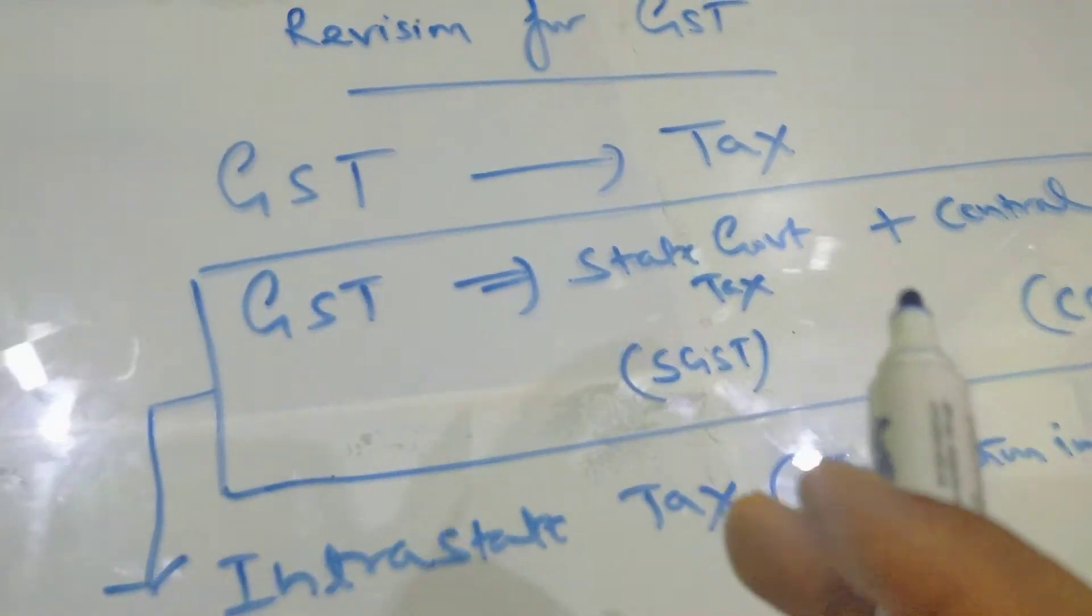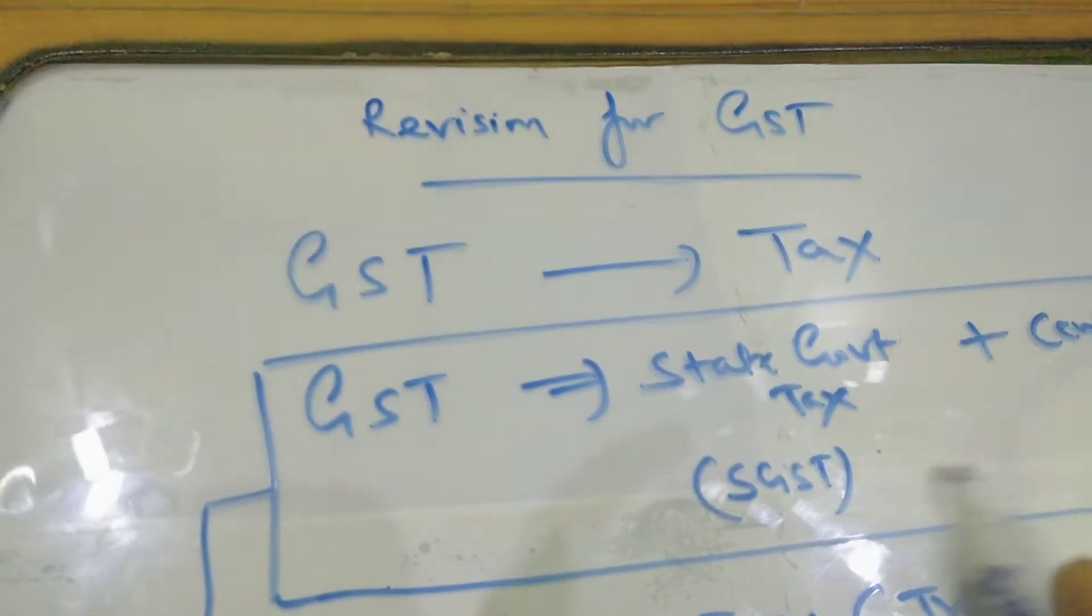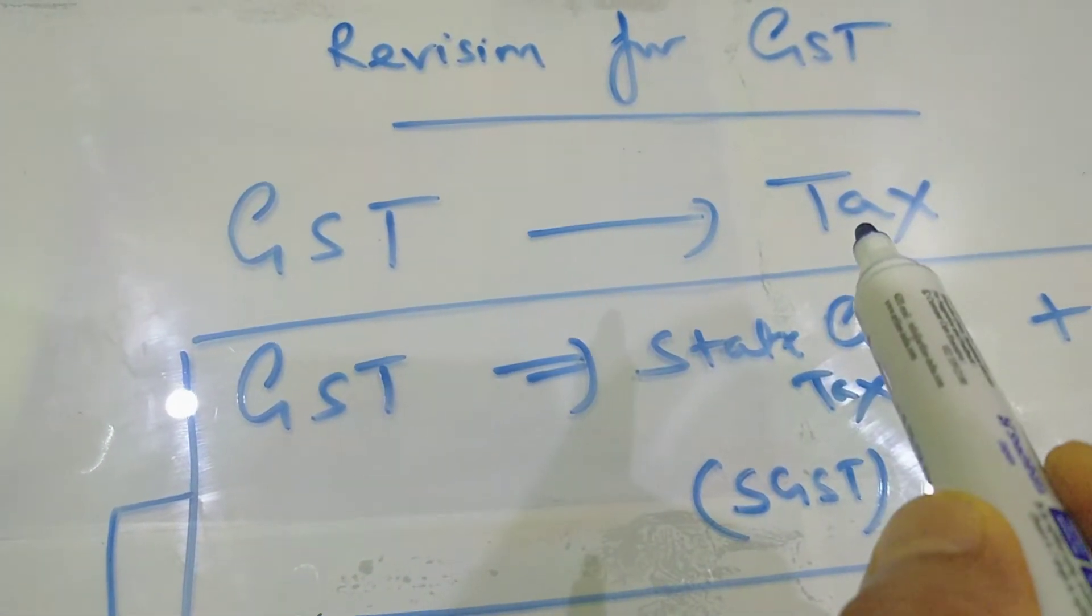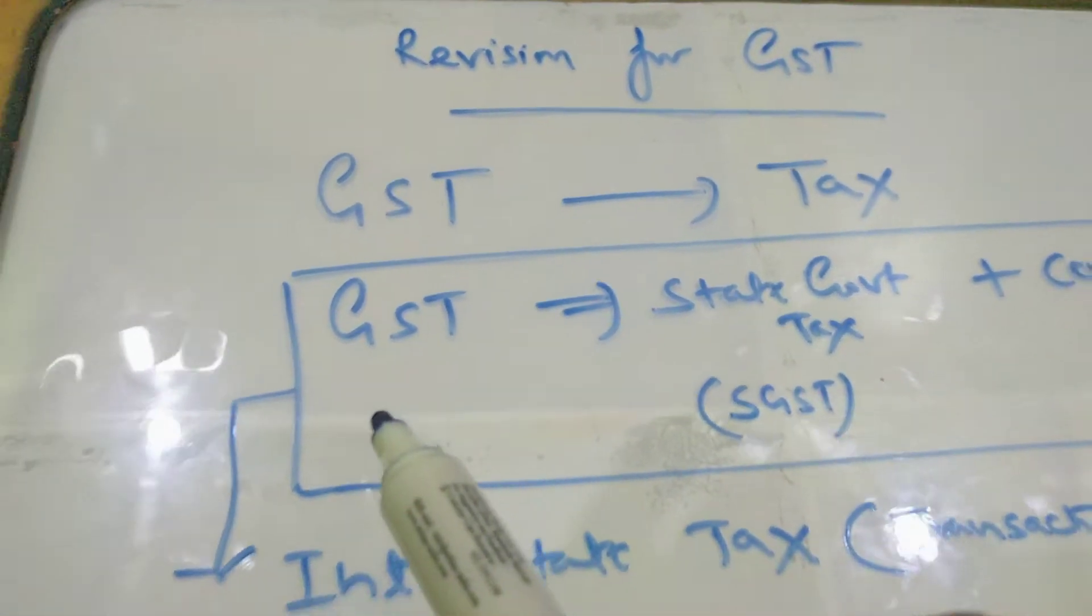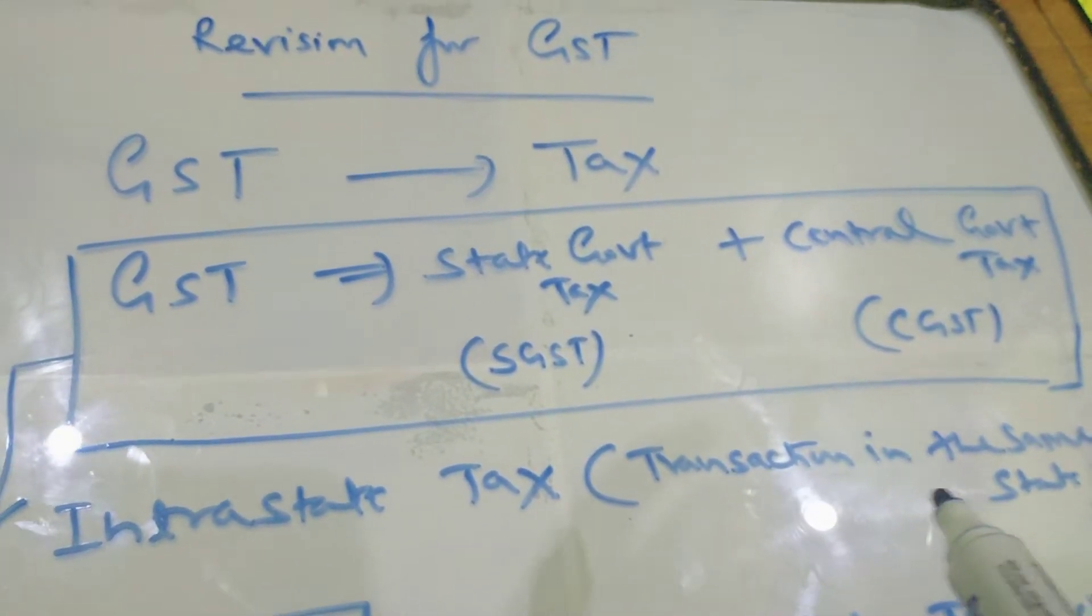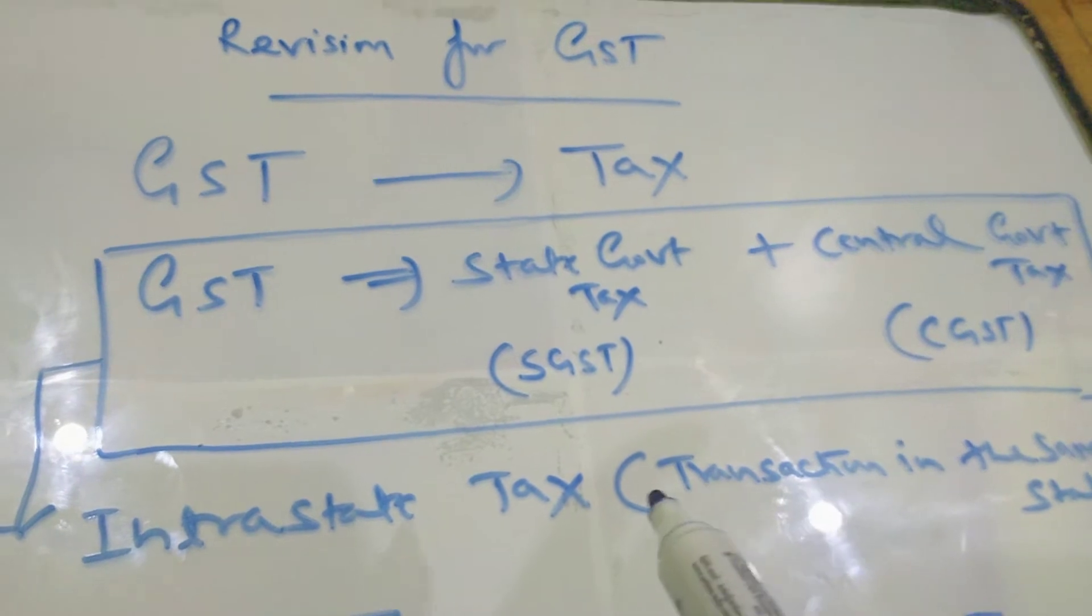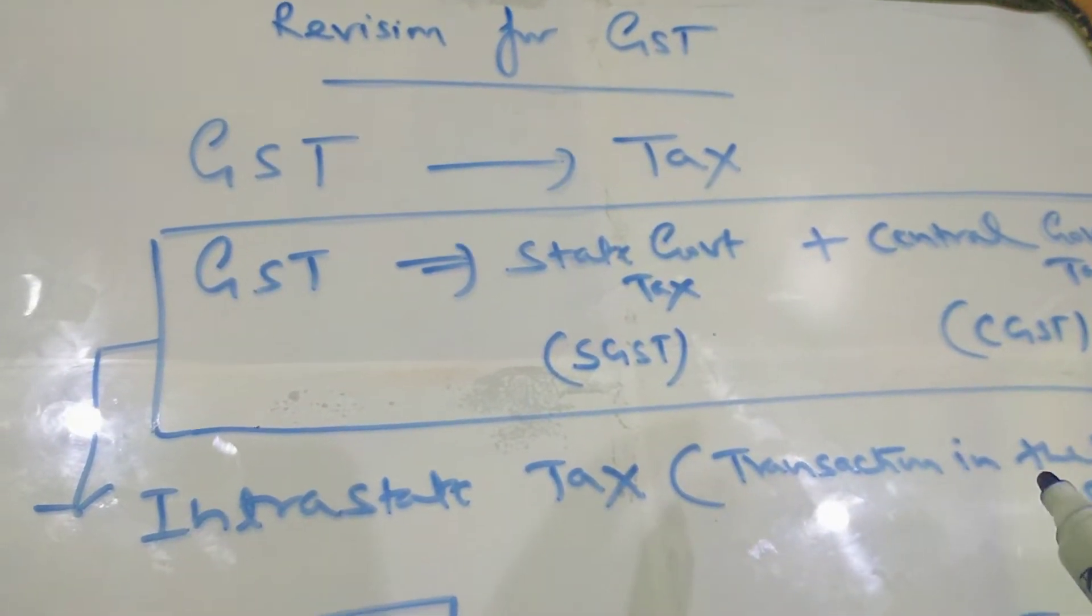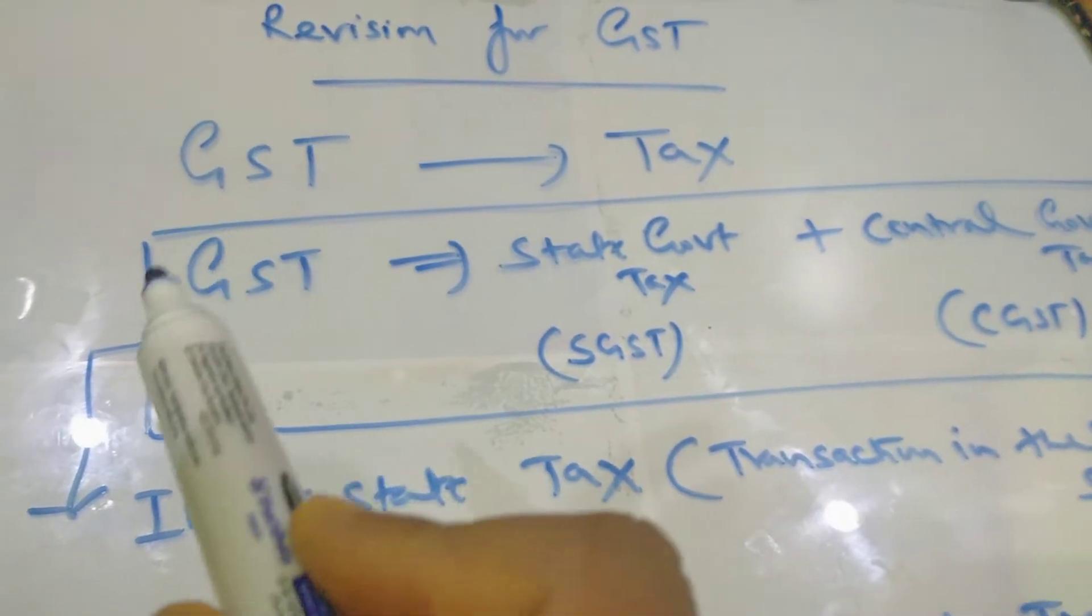First of all, whenever you find a question from GST, you should have an idea what is the meaning of GST. GST means tax. If your transaction is intrastate, intrastate means transaction in the same state. If you are in Uttarakhand and all the transactions are made in Uttarakhand only, then you should apply the concept of GST.